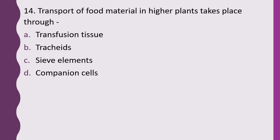Question 14. Transport of food material in higher plants takes place through: transfusion tissues, tracheids, sieve elements, or companion cells. The correct answer is option C, sieve elements.